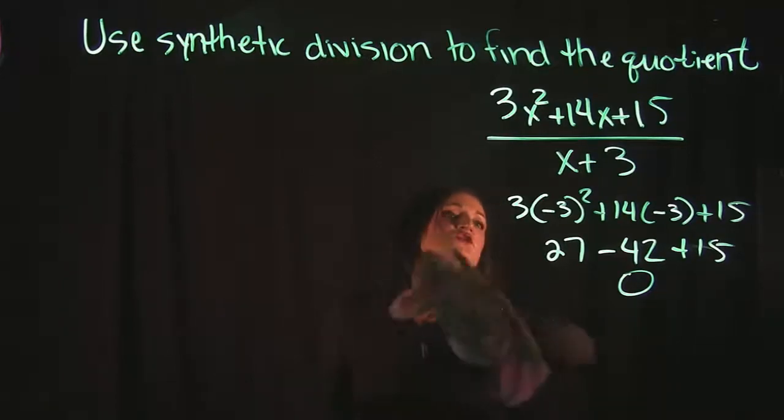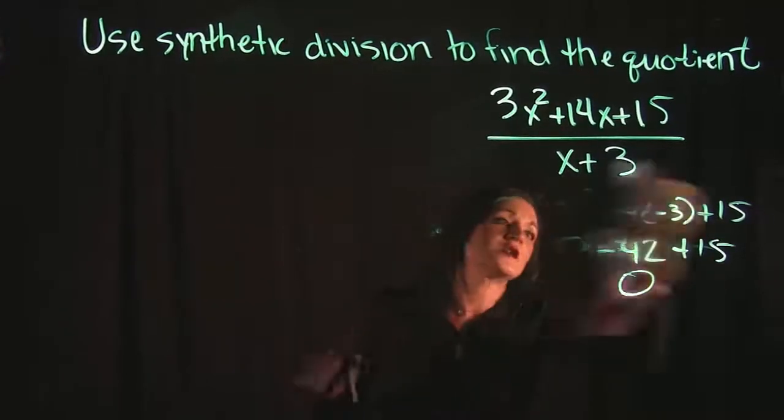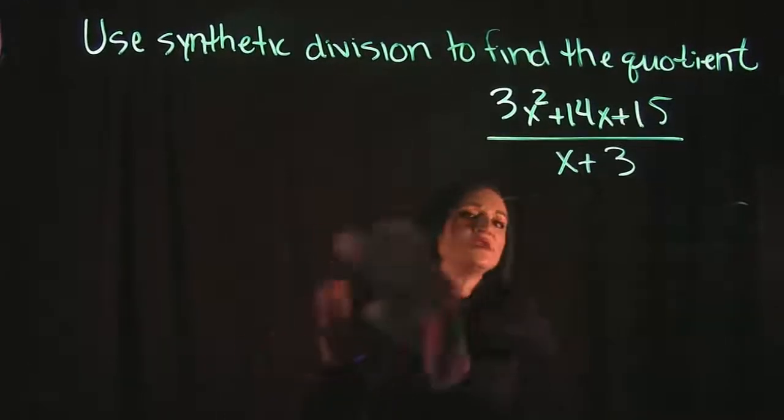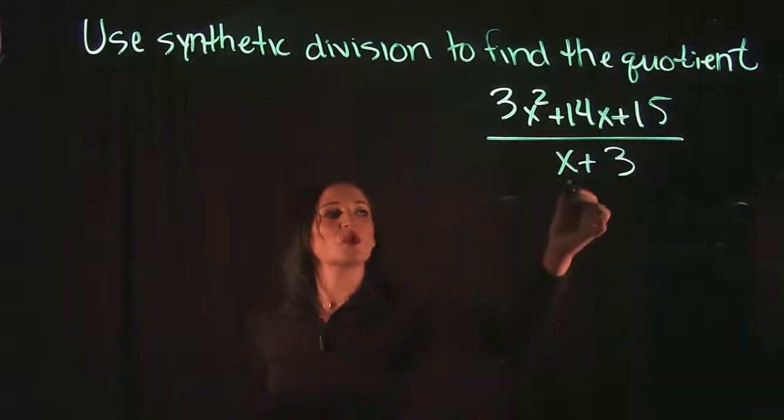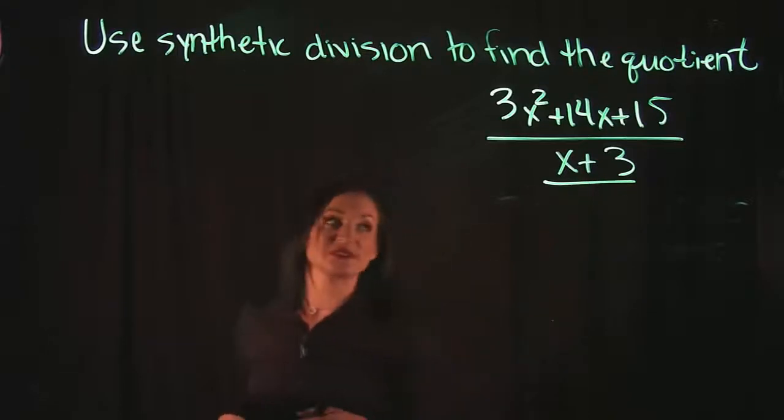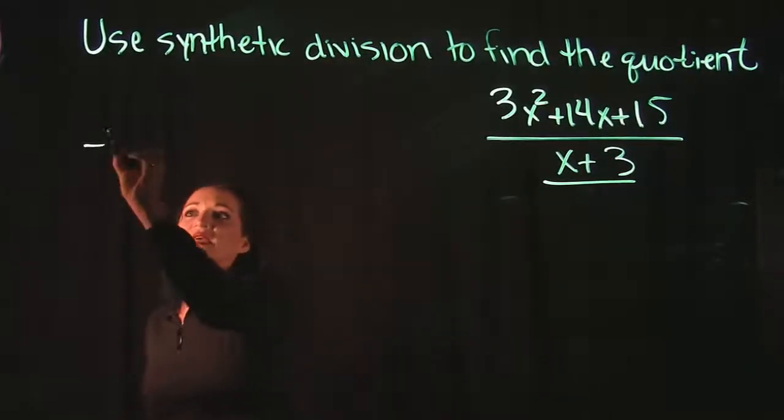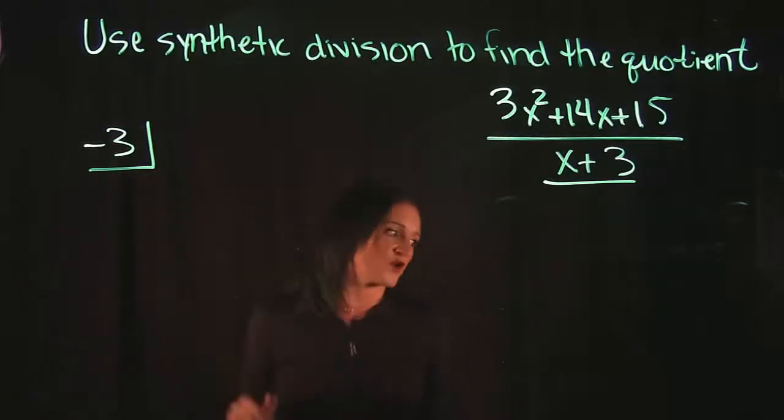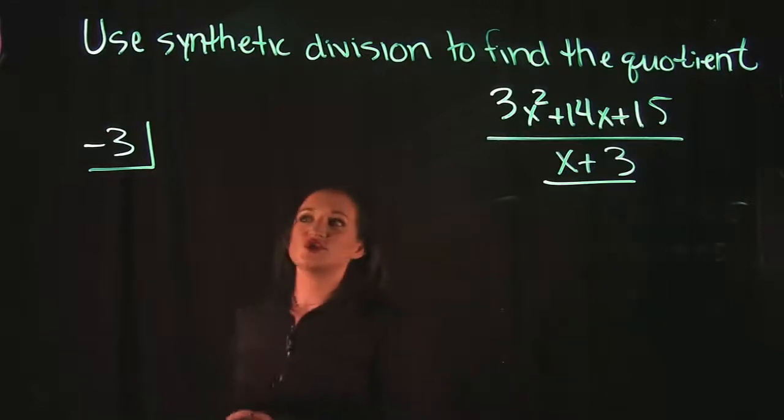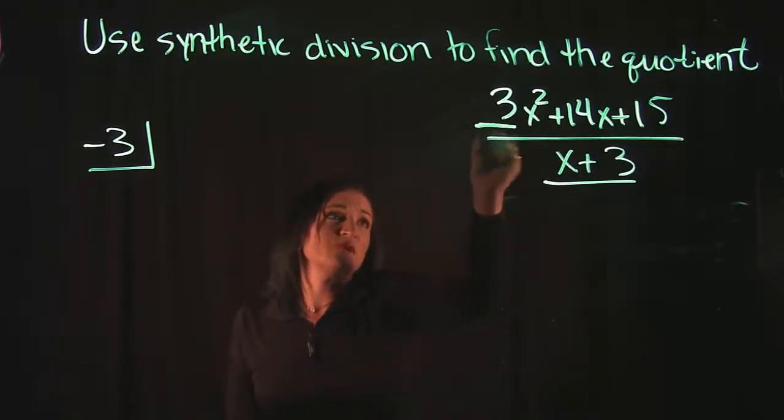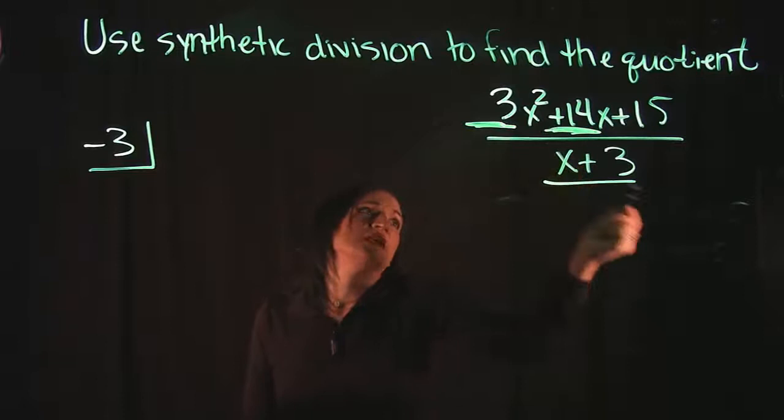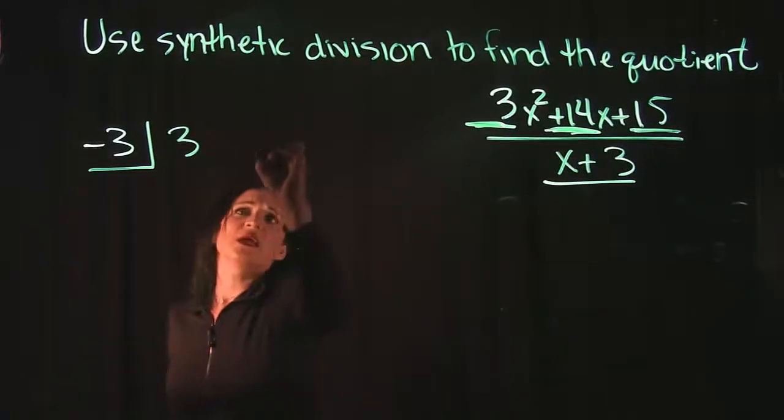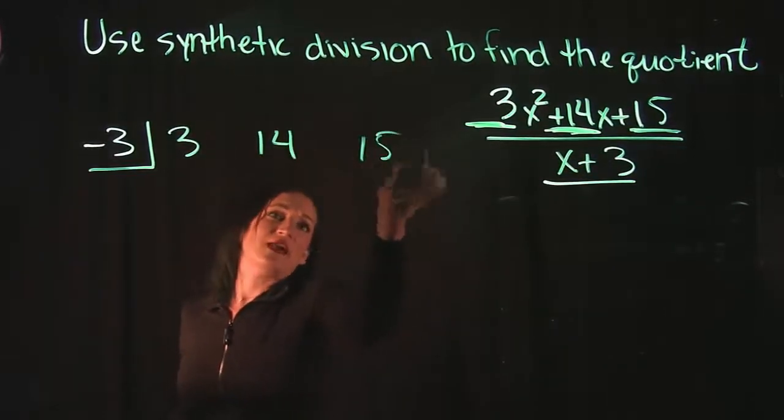To do that, the way that we set up the synthetic division: again, we're going to work with our divisor and we want the opposite sign of that. So the opposite of a 3 is a negative 3, and what I'm going to do is I'm going to put the negative 3 in its own little corner over here. And what I want to do on the right of it is I want to take the coefficients of every term in my numerator. The coefficients would be 3, 14, and 15, so I have a 3, a 14, and a 15.